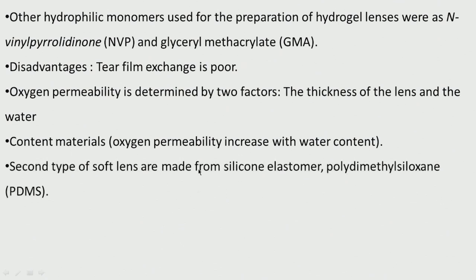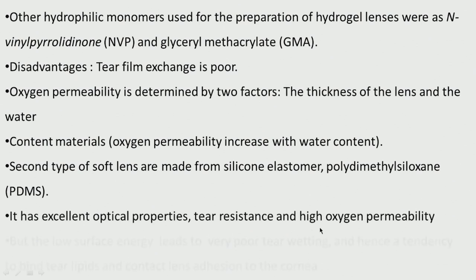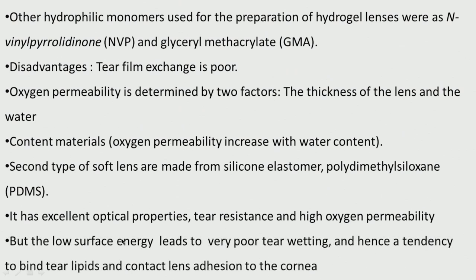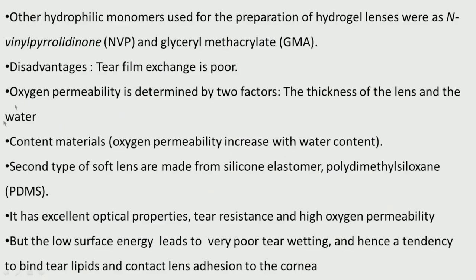The second type of soft contact lenses is made from silicone elastomer — polydimethylsiloxane (PDMS). It has excellent optical properties, good tear resistance and high oxygen permeability. However, the low surface energy leads to very poor tear wetting, a tendency to bind tear lipids, and contact lens adhesion to the cornea. The low surface energy means a very high contact angle, so when tear drops come down they do not wet properly, lipids get bound and the lens adheres to the cornea.